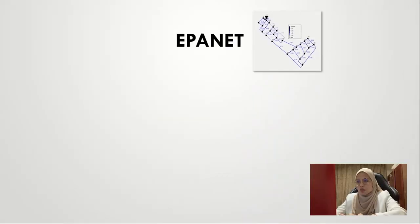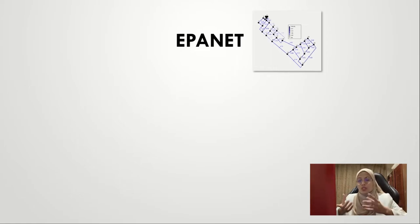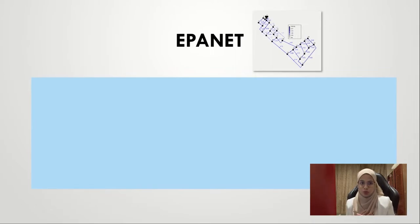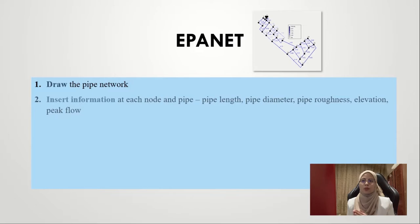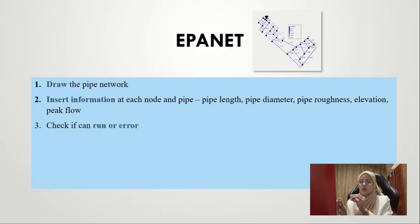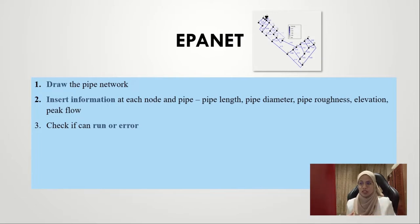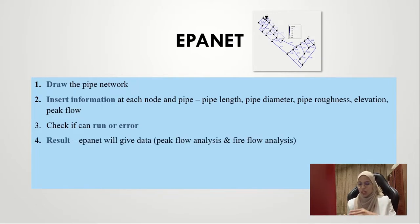In designing this water reticulation system, we also use a software known as ePanet. The first step is to draw the pipe network — we drew it manually rather than transferring from AutoCAD. The second step is to insert information at each node and pipe, such as pipe length, pipe diameter, pipe roughness, elevation, and peak flow. Elevation data was obtained from the Earthwork department. The third step is to check if the pipe network drawing can be run without errors. If successful, ePanet produces results for peak flow analysis and fire flow analysis.